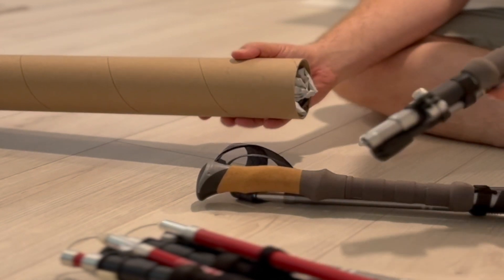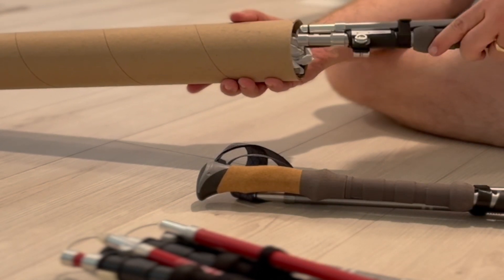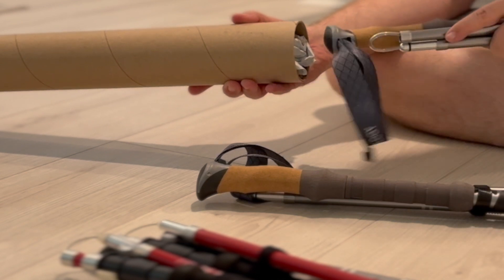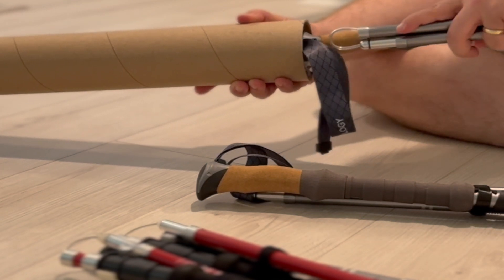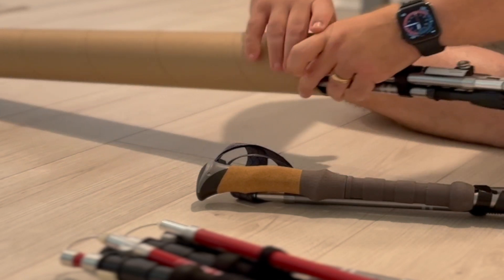To protect your poles, place packing material into the end of the tube first. Next add one pole with the handle facing down into the tube, as this will create more space and alignment for the second pole.